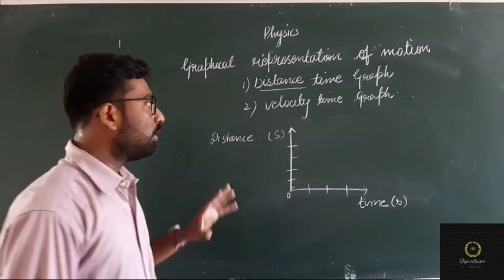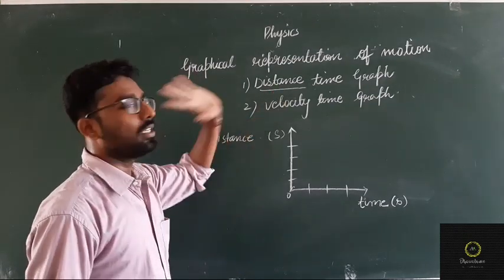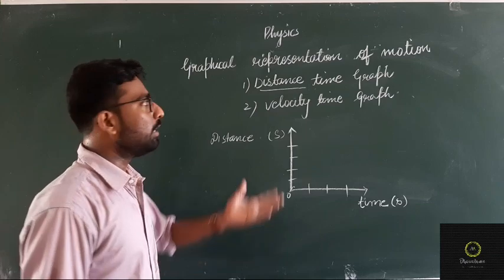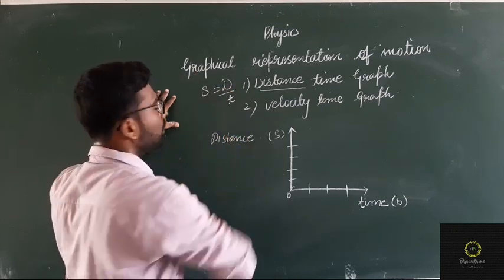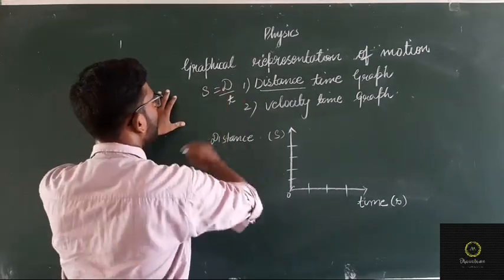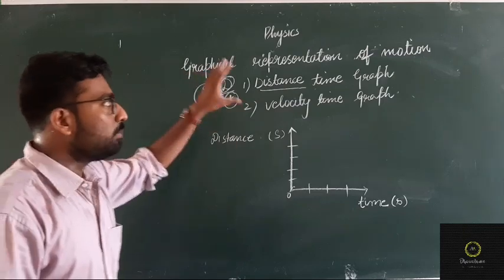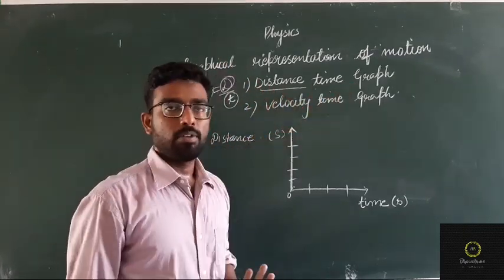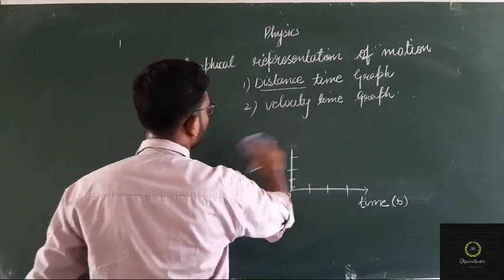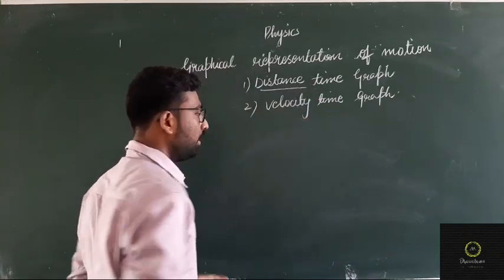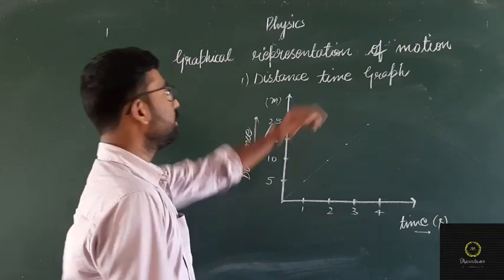Moving further — how can we calculate speed using a distance-time graph? As we all know, speed equals distance upon time. Distance is given and time is given, so we will calculate speed. To calculate the speed, we use the distance-time graph. We will study three particular cases in the distance-time graph.